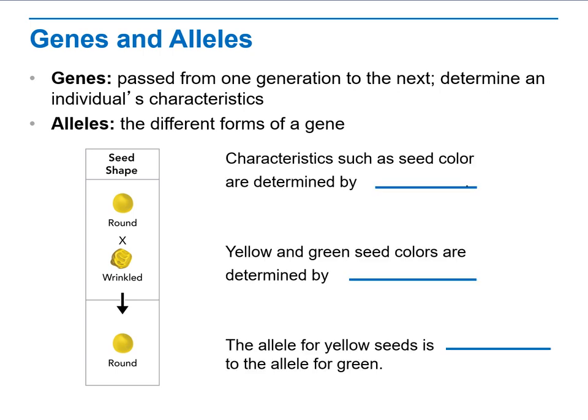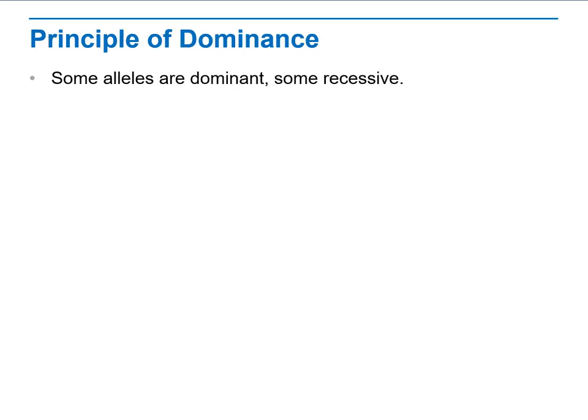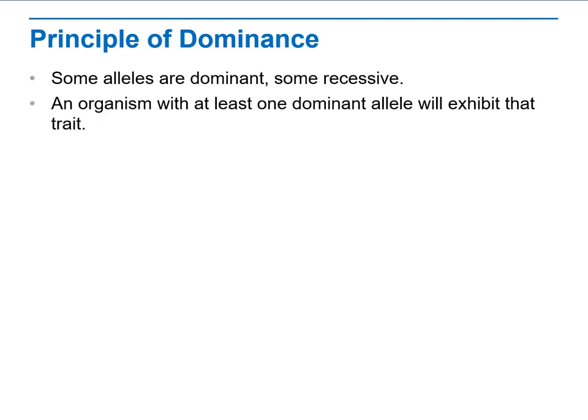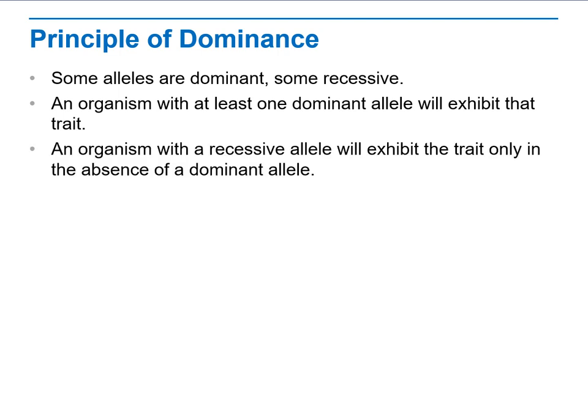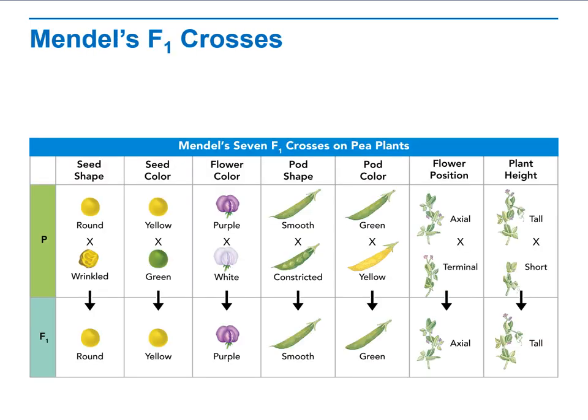Some alleles are dominant and some are recessive. A dominant allele is one that is expressed or visible in the trait. An organism with at least one dominant allele will show the dominant trait. A recessive allele is only expressed in the absence of the dominant allele.